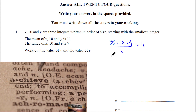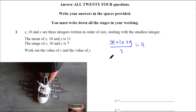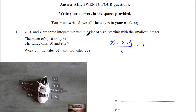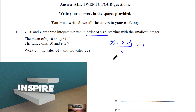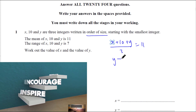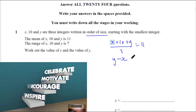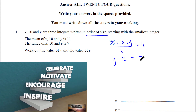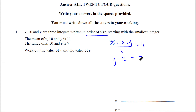The range of X, 10, and Y is 7. They're written in order of size, so that must mean Y minus X — largest minus the smallest — equals 7. Is this some kind of simultaneous equation? So let's rearrange one.